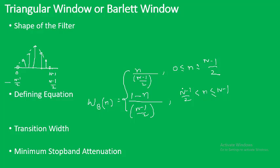If we vary this length, the definition changes accordingly — the range would go from minus (N−1)/2 to 0 and then 0 to (N−1)/2, meaning the midpoint becomes 0. The transition width associated with the Bartlett window is 8π/N, and the minimum stopband attenuation is minus 25 dB. In brief, this is the triangular window.